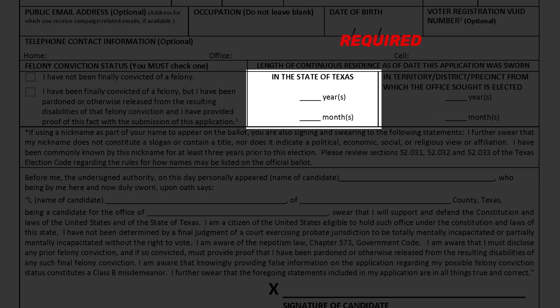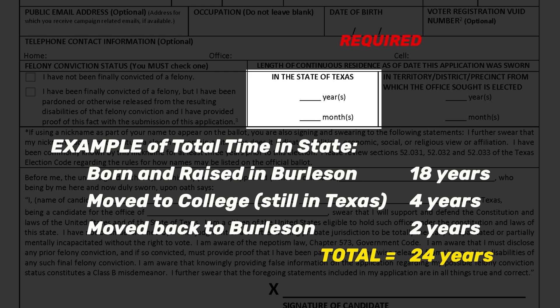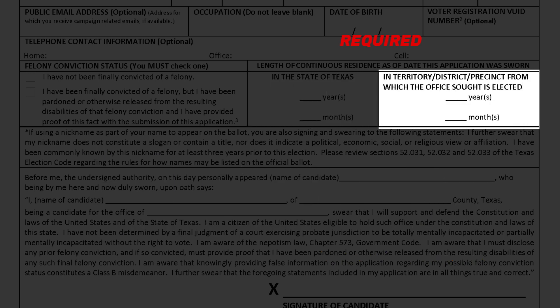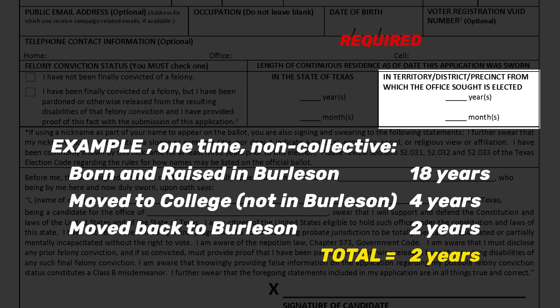In the section titled 'In the State of Texas,' this is the total time you have been a resident of the State of Texas at one time. An example: if you were born and raised in Burleson for 18 years, moved to college outside of the City but still in Texas for four years, then moved back to Burleson for two years, the total residence for this application purpose is 24 years. In the section marked 'In the Territory, District, Precinct from which this office is sought to be elected,' this is the time you have been a resident of the City of Burleson at one time. You cannot use collective time in the City if you have moved outside of the City limits.